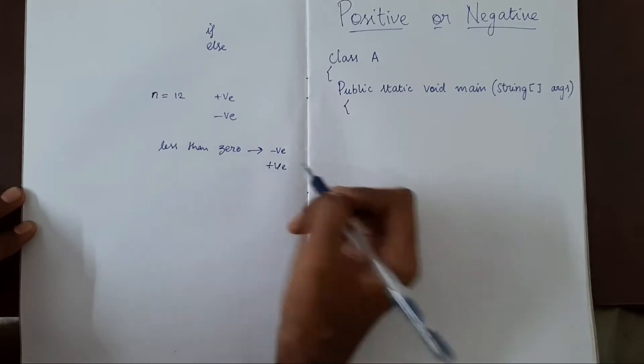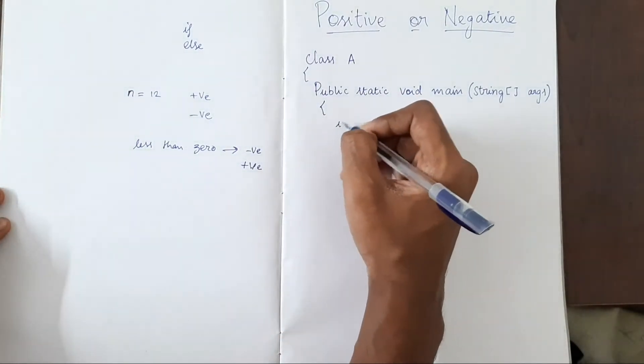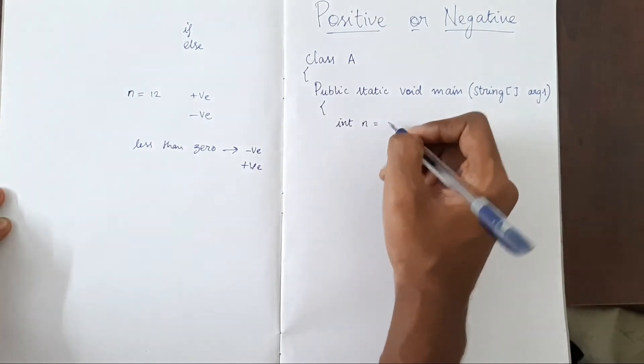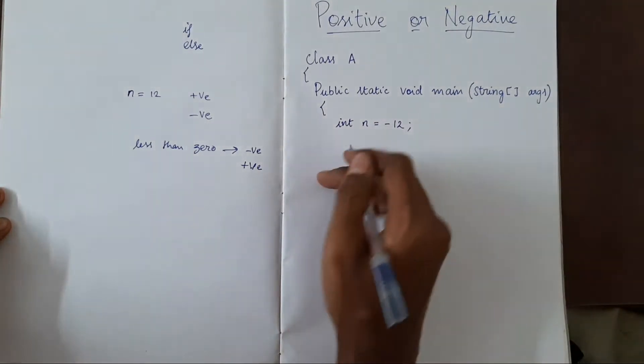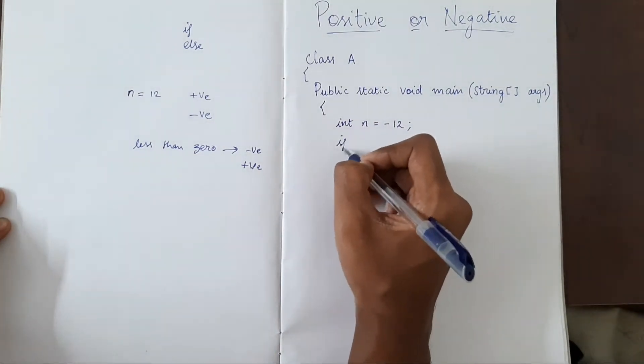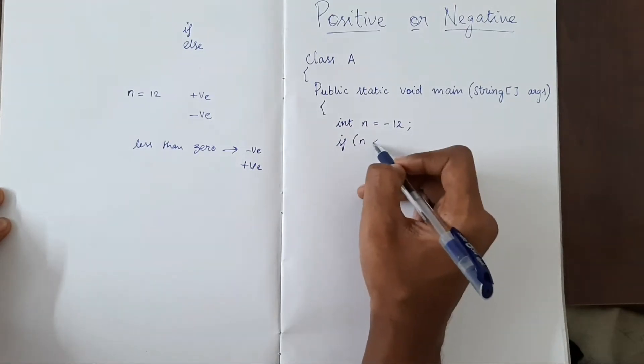So it's very simple. We have a number n of type int. Let's take minus 12. Using if, if n is less than 0,